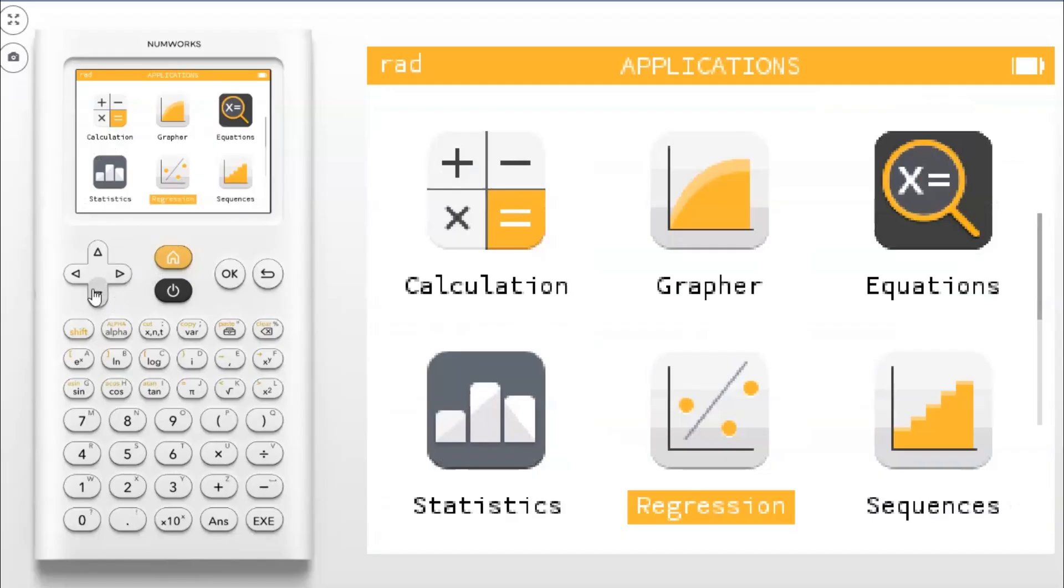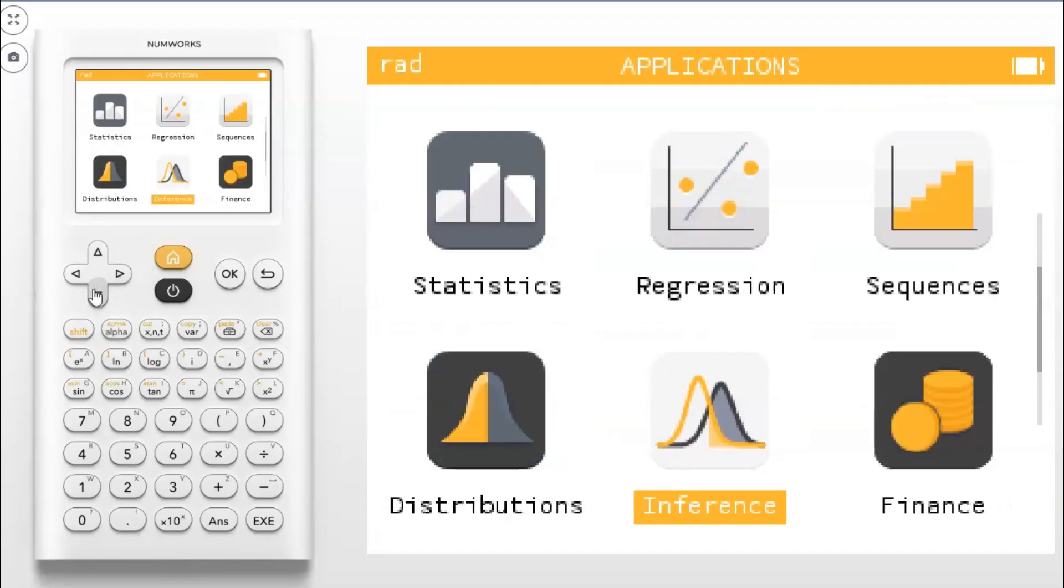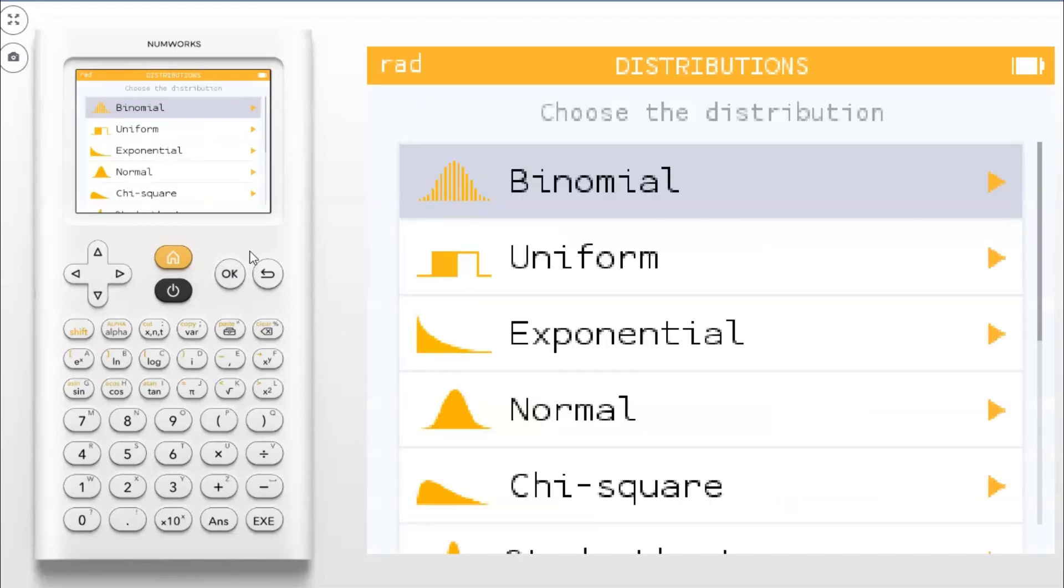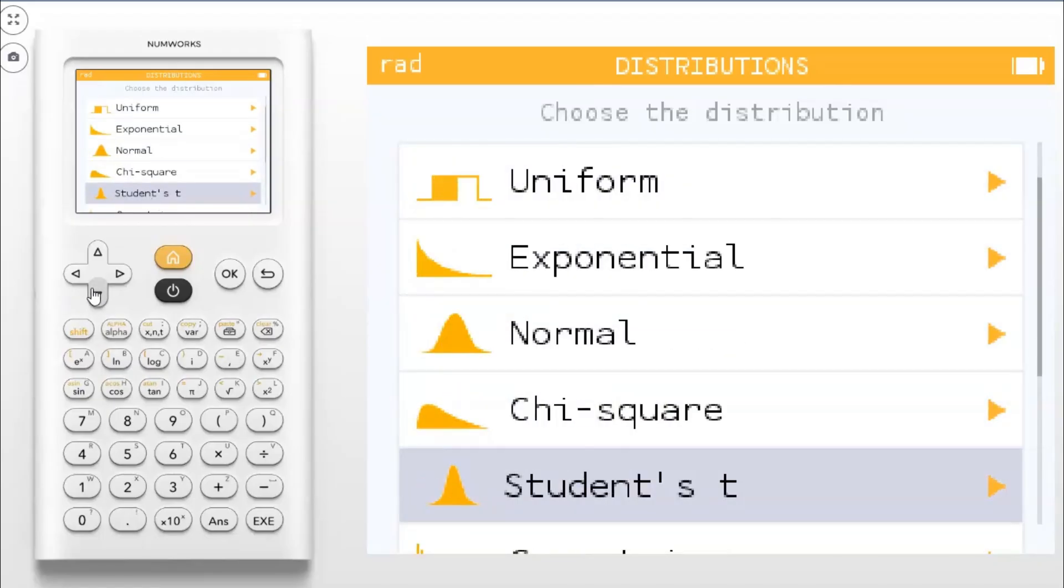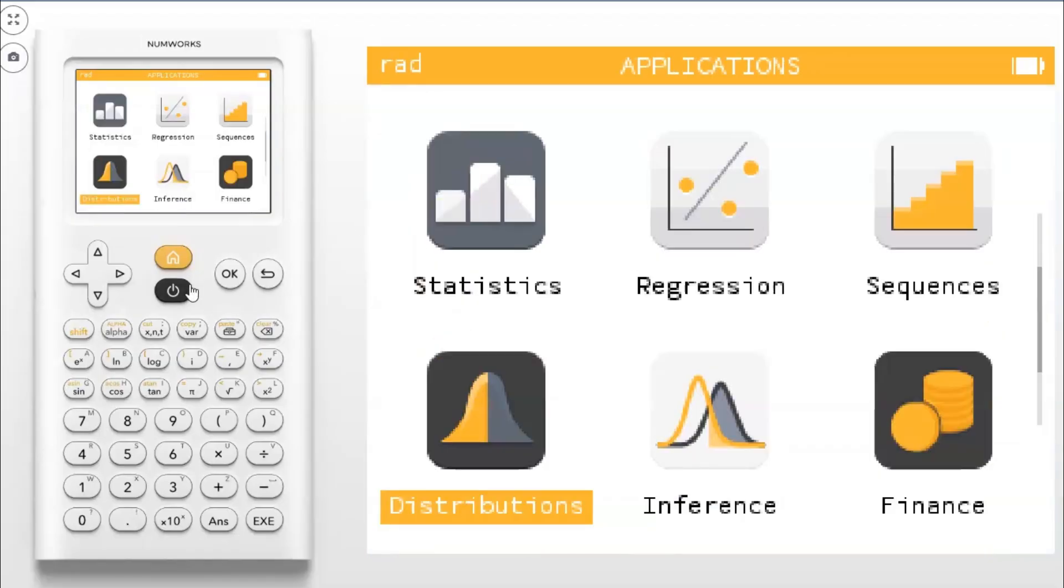A couple more things I'm going to show you real quick. Now, you're not going to get into this until much later in AP Statistics, but there's an app for distributions. You're going to be using the binomial distribution and the normal distribution, as well as the chi-squared distribution. And if you scroll down, you'll even see one called Students T.